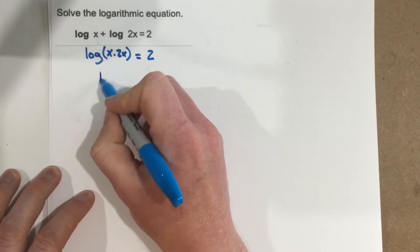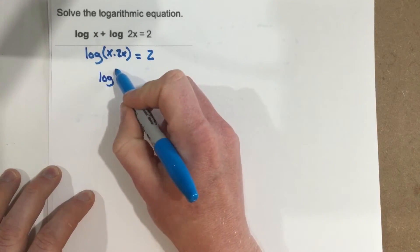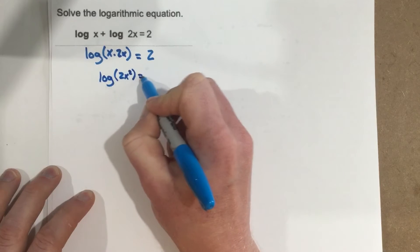That gives us log of 2x squared equals 2.